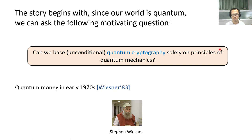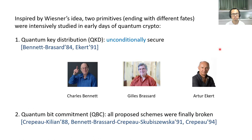Stephen Wiesner might be the first person to explore this possibility. Back in the early 1970s, he first studied quantum money. Inspired by Wiesner's idea, two primitives ending with different fates were intensively studied in the early days of quantum crypto.